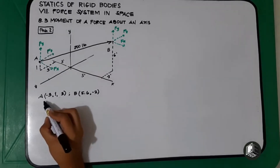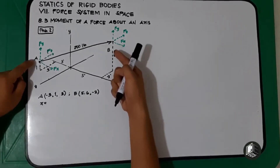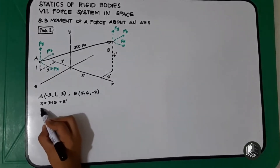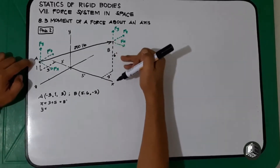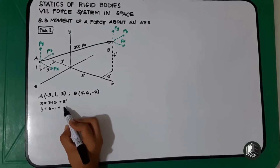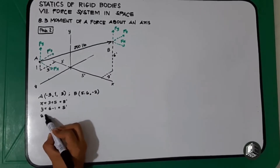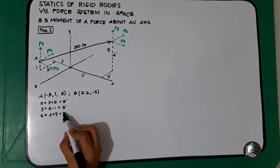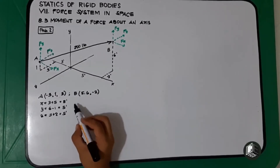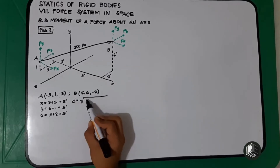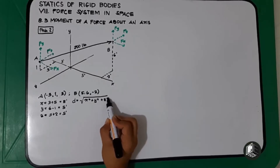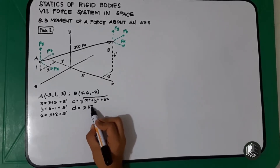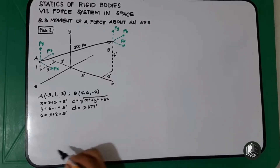The x-component from point A to point B is negative three plus positive five, which gives eight feet. The y-component is six minus one, which equals five feet. The z-component is three plus two, which equals five feet. The distance D equals the square root of x-squared plus y-squared plus z-squared, giving D equals 10.677 feet.